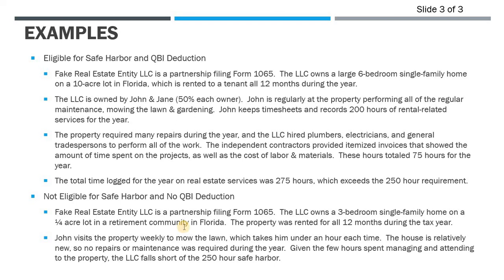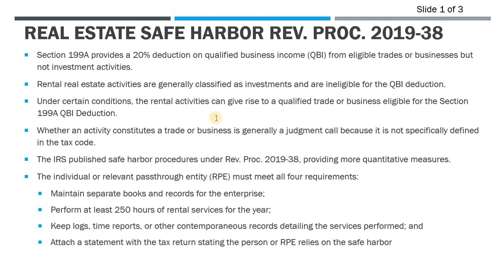Even though they might not get the QBI deduction here, remember this is a separate analysis from material participation. If John is actively involved in the property, he might qualify for the active rental real estate exemption where you can deduct up to $25,000 of losses — but that's a completely separate analysis. This safe harbor is applicable solely for purposes of determining whether you meet the Section 199A QBI deduction eligibility.